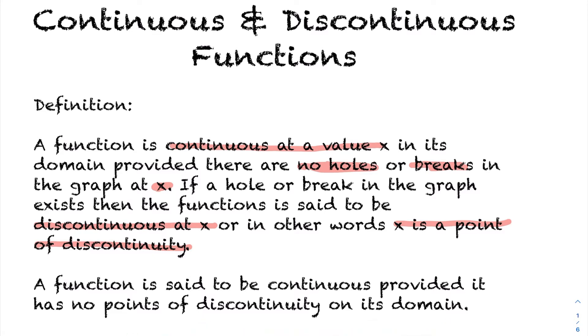A function is continuous provided it has no points of discontinuity. So if someone says a function is continuous on its domain, that means for every single value of x that we look at, everything in the domain, there's no holes or breaks, which essentially means that the function itself when graphed has no holes or breaks in the graph. Let's look at some examples.